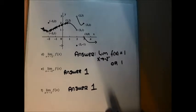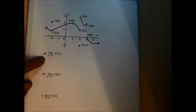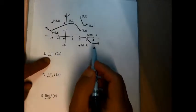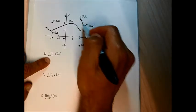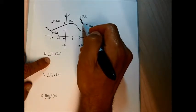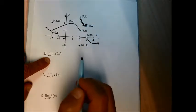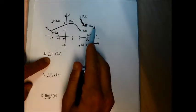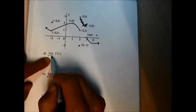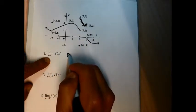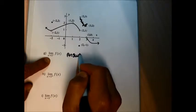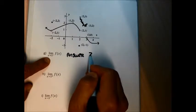Parts G, H, and I involve approaching x = 3. For part G, approaching 3 from the left side, I trace along the left portion of the graph and stop right before the point at x = 3. The y-coordinate of that point is the limit, so the answer to 1G is 2.